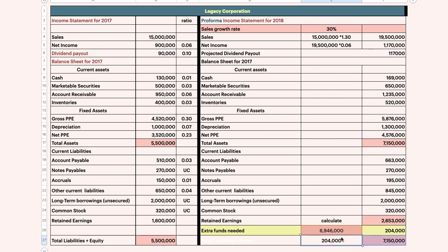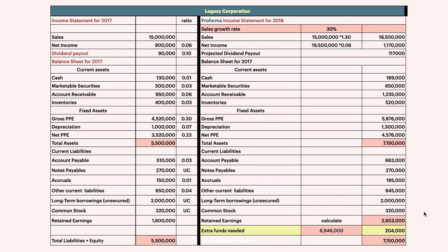Then total everything and multiply. We have already produced the Pro Forma statement and also calculated the extra funds needed. I hope you understand how to find it. That's all. This is the format that I suggest to you.